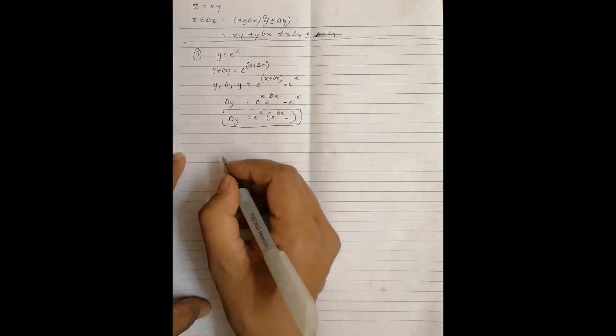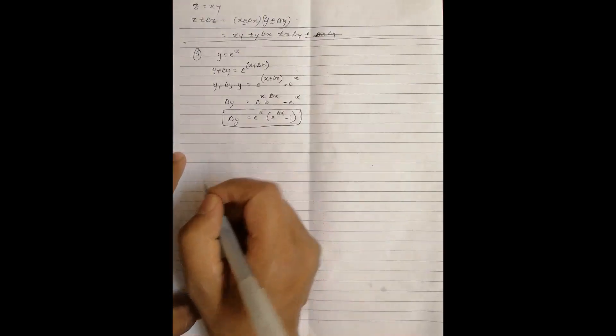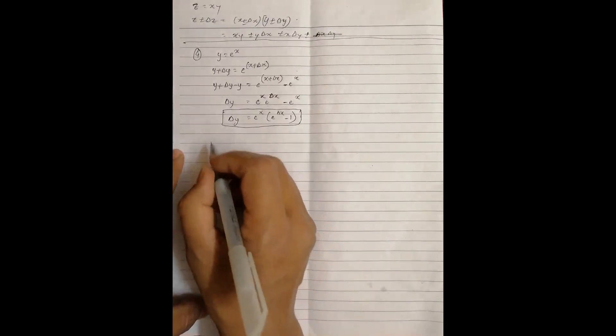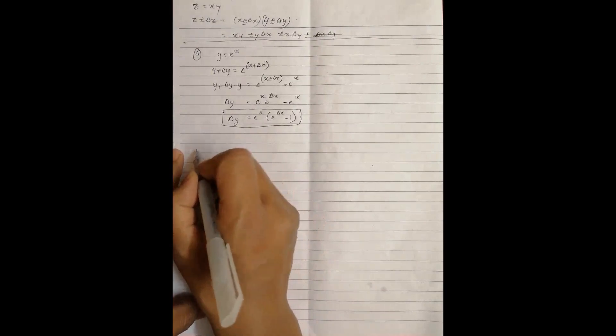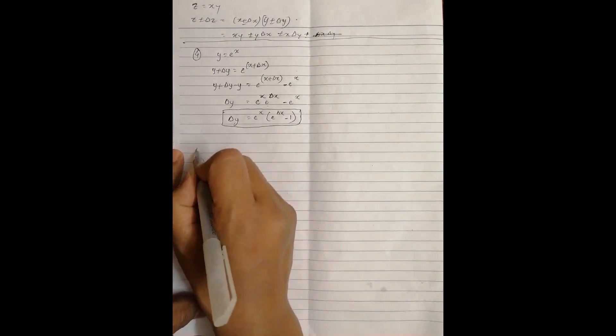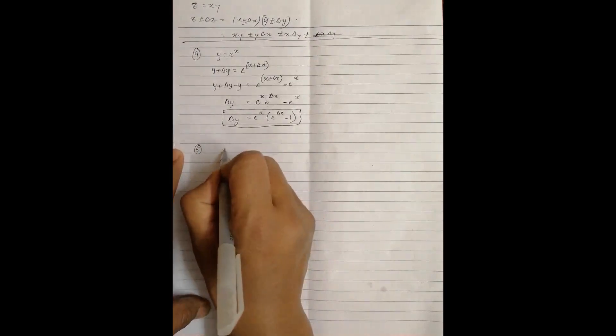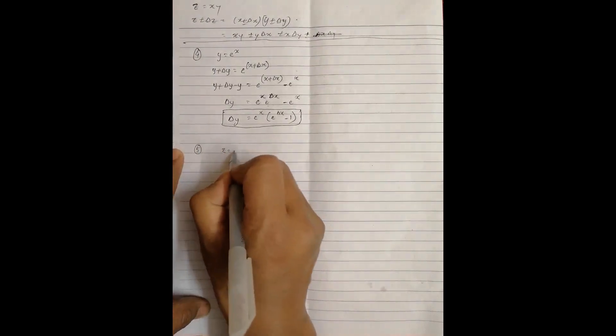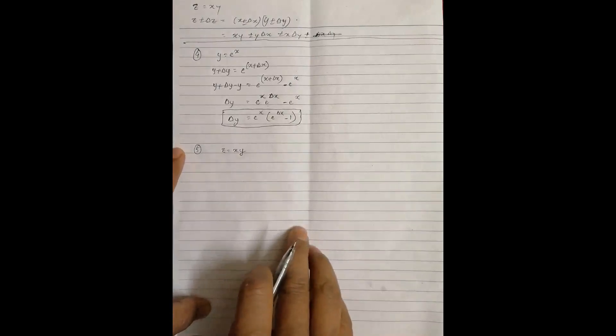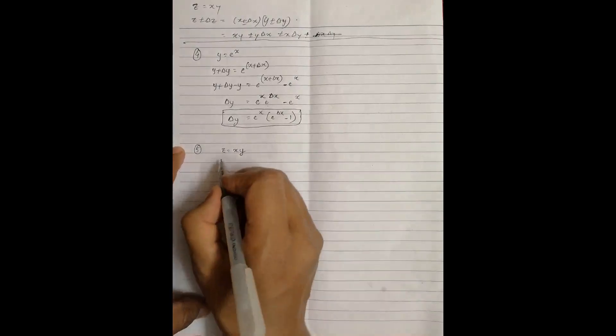Hello folks. Now the second part of error propagation. So if I have a quantity like this — let us say z is equal to x into y, z equal to x into y.